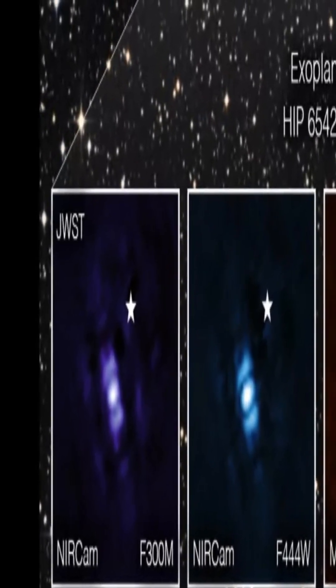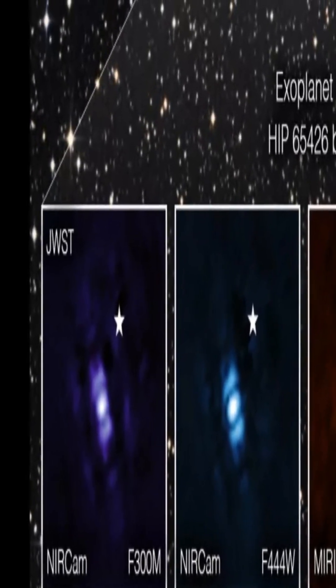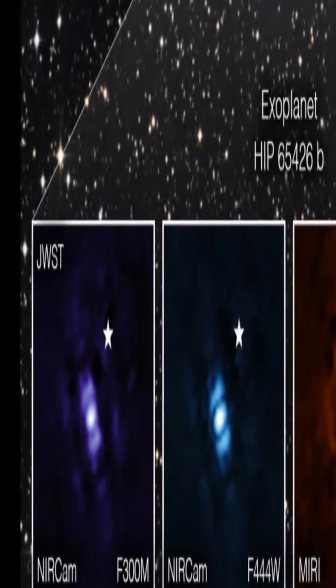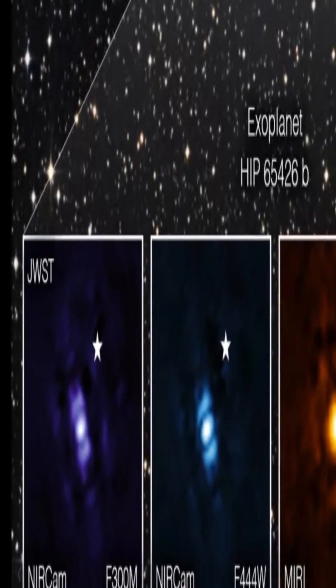Only about two dozen exoplanets have been directly imaged. The vast majority have only been detected through transient dimming of the stars they orbit.